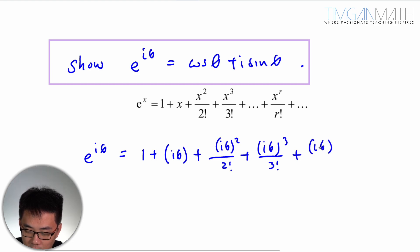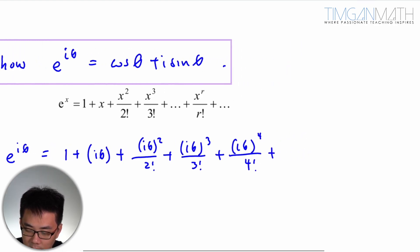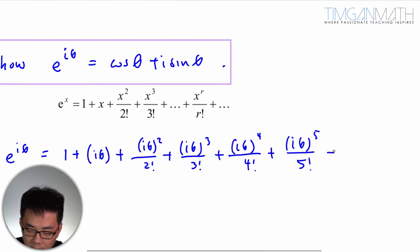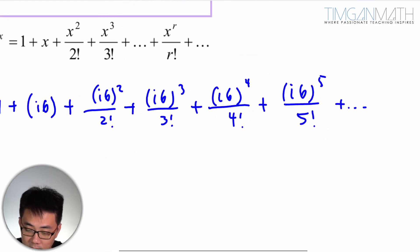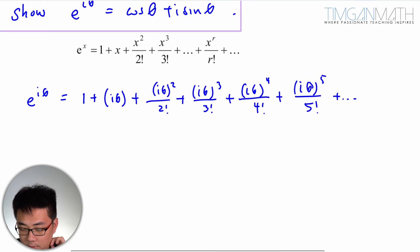Then you just put (iθ)² over 2 factorial, then you just move on. Of course it's not going to be easy, so I'm going to go to some higher power here: (iθ)⁴ over 4 factorial, (iθ)⁵ over 5 factorial and so on. Maybe you want to go to the power of 6, but you can just leave it like that. Now the factorial sign, don't go and expand it please, you make life complicated.